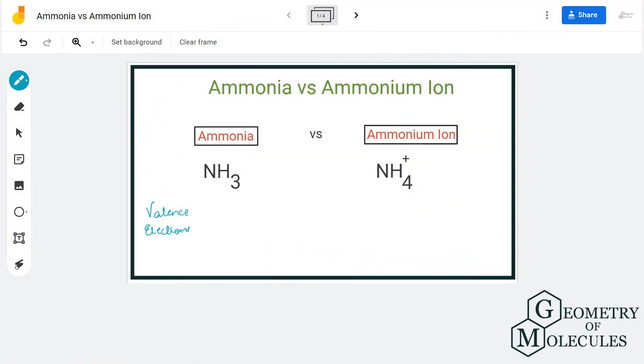Hi guys, welcome back to the channel. Today we are going to learn about the differences between ammonia and ammonium ion. As you can see here, ammonia has the chemical formula NH3 and the chemical formula for ammonium ion is NH4 plus.